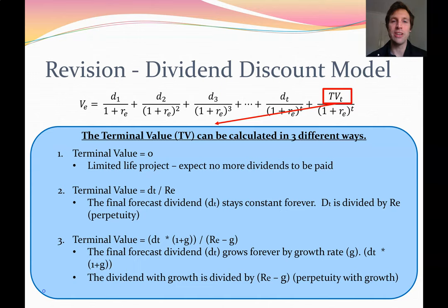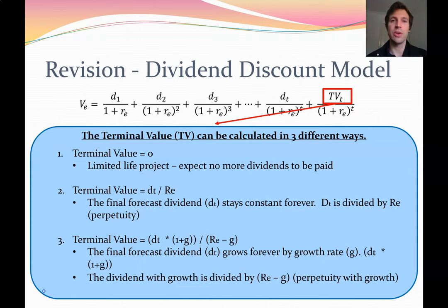The third terminal value assumption is that the dividend will continue growing into the future at an exponential rate — for example, 2% per year, roughly matching expected economic growth. To calculate this terminal value with growth, you take your final forecast dividend, multiply it by the growth factor to get next year's expected dividend, then divide by RE minus G (the cost of equity capital minus the growth rate). Remember that the terminal value must also be discounted back to the present. You then add up all those terms to get the value of equity.